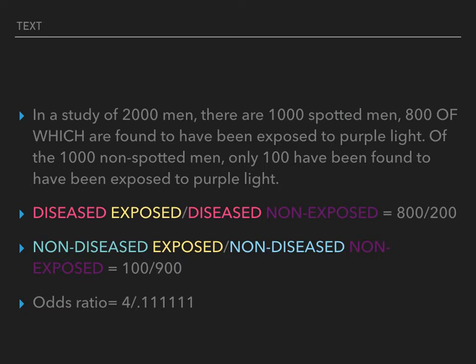The second ratio is non-diseased-exposed over non-diseased-not-exposed. The 100 we get from the last line, which says that of 1,000 non-spotted men, only 100 have been exposed to purple light. The 900 in the denominator is inferred: 1,000 non-spotted minus 100 exposed equals 900 who had no exposure.